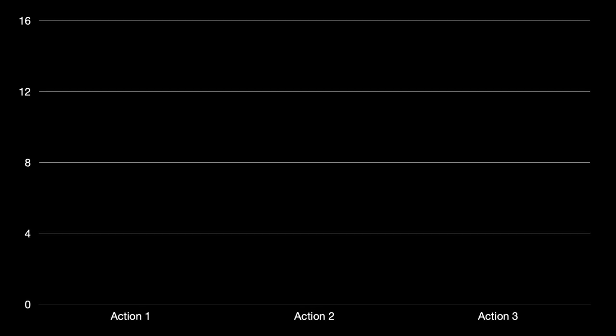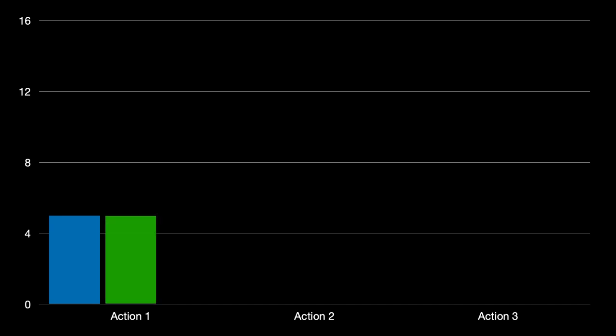So here's a question. Suppose we have three possible decisions — action one, action two, or action three. For action one, suppose we can quantify happiness in this way: it produces five units of happiness for person A — I think that's blue, I'm a little colorblind — five units of happiness for person B, and five units of happiness for person C. Everybody gets the same amount of happiness.